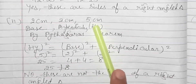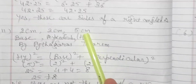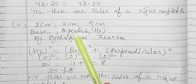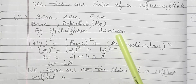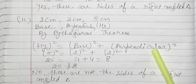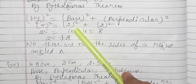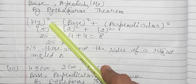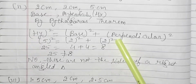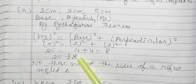Part (b): 2 cm, 2 cm, and 5 cm. The longest side is 5 cm, so I will take 5 cm as hypotenuse; the others are base and height. By Pythagoras theorem: hypotenuse² = base² + perpendicular². So 5² = 2² + 2², which gives 25 = 4 + 4.